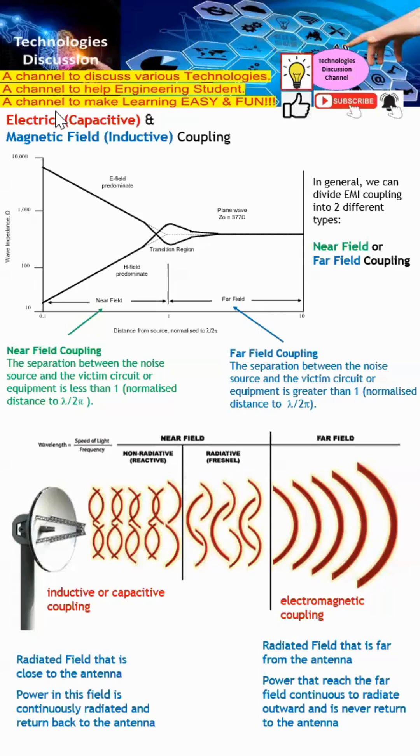Hello everyone. In this video, I'm going to explain what is electric and also what is magnetic field coupling. Electric is also known as capacitive coupling, while magnetic field is actually known as inductive coupling. In general, we can divide EMI coupling into two different types: the first one is near field, the next one is far field.